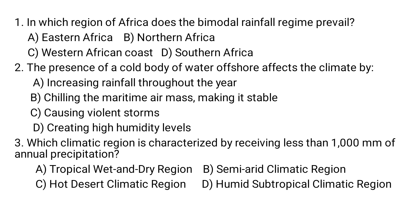Question number three: Which climatic region is characterized by receiving less than 1,000 mm of annual precipitation? A. Tropical wet and dry region. B. Semi-arid climate region. C. Hot desert climate region. D. Humid subtropical climate region.